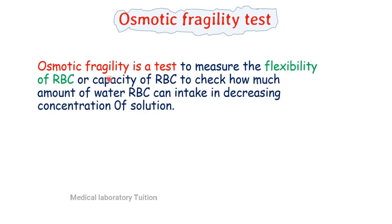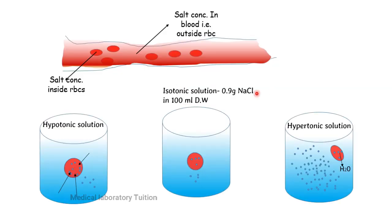The osmotic fragility test measures the flexibility of RBC — the capacity to check how much water the RBC can take in a decreasing concentration of solution. A hypotonic solution is when we decrease the concentration below 0.9 — for example, 0.8 gram, 0.7 gram, 0.5 gram. We challenge the RBC in different decreasing concentrations of hypotonic solution.